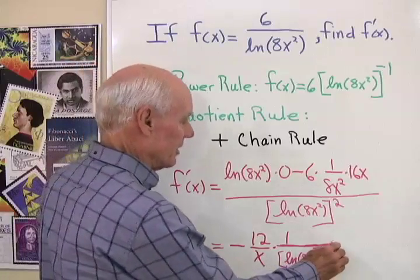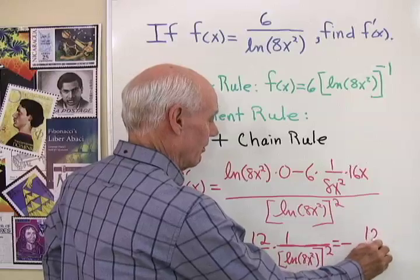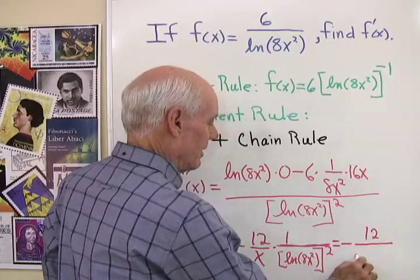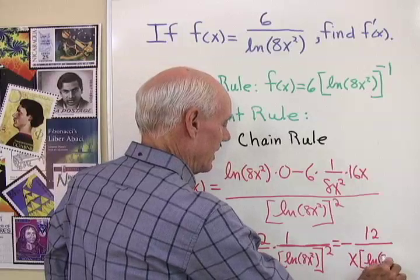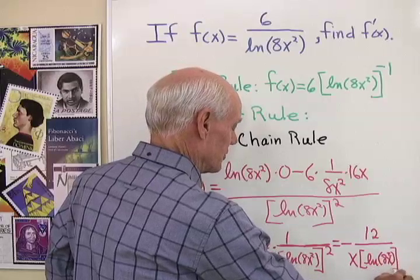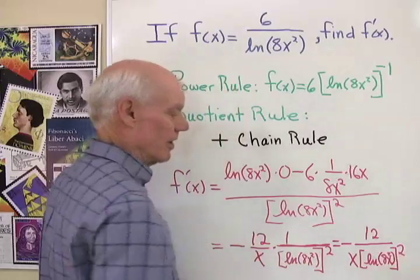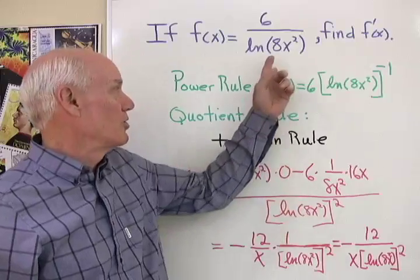I could simplify this a little bit more. This is going to be negative 12 over x times natural log 8x squared, close the parentheses, close the brackets, that whole quantity squared. So there's my derivative using the quotient rule right here.